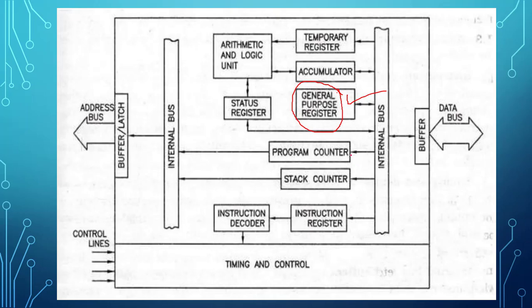Now coming to program counter. Program counter friends, it is always used for pointing to the next instruction. Like if your current instruction is being executed, which instruction needs to be executed next, that address is stored in the program counter.